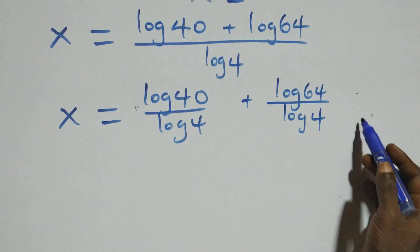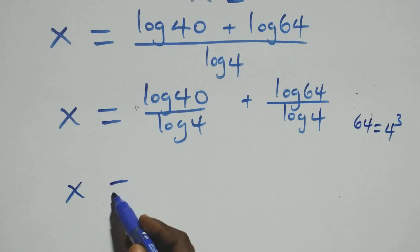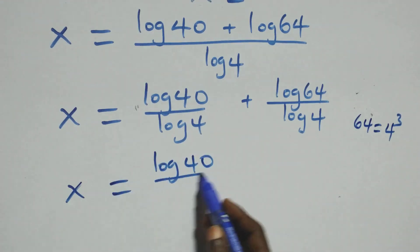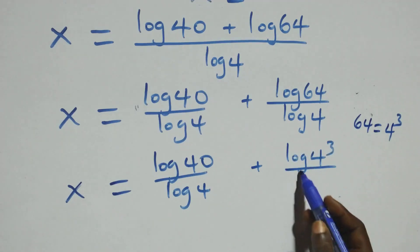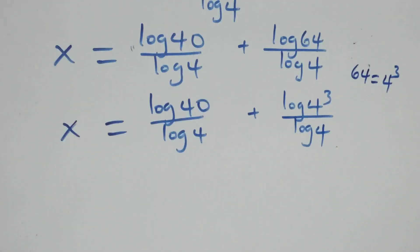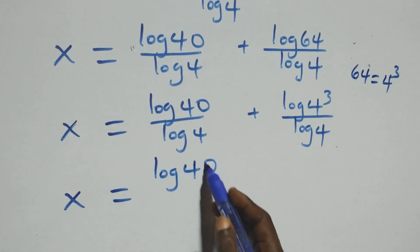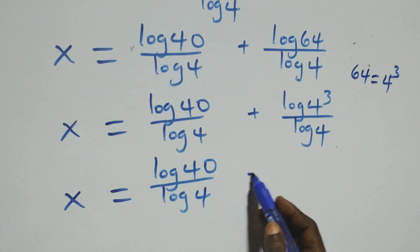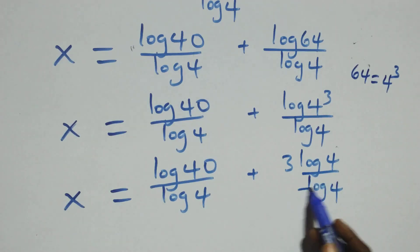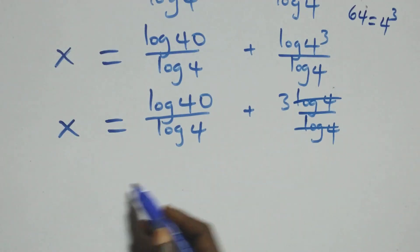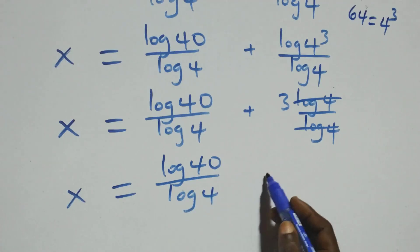Here, 64 is the same thing as 4 times 4 times 4, so that's 4 cubed. We have x equals log 40 over log 4 plus log 4 cubed over log 4. We apply the power rule: the 3 comes down, giving x equals log 40 over log 4 plus 3 log 4 over log 4. The log 4 terms cancel each other, leaving 3. So x equals log 40 over log 4 plus 3.